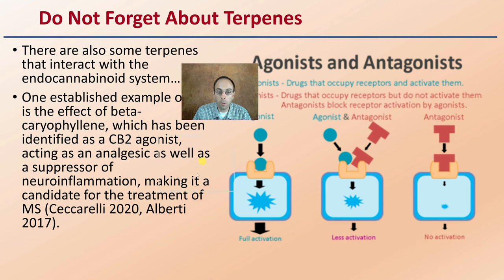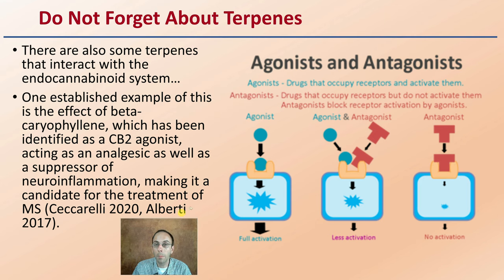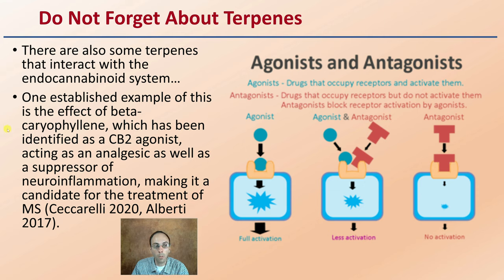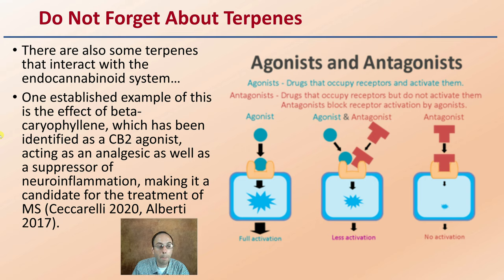Do not forget about terpenes — there are also some terpenes that interact with the endocannabinoid system. One established example is beta-caryophyllene, which has been identified as a CB2 antagonist, acting as an analgesic as well as a suppressor of neuroinflammation, making it a candidate for the treatment of MS, or multiple sclerosis.